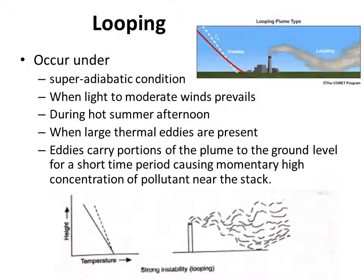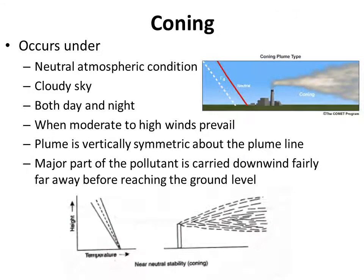The area where concentration of pollutant becomes very high on the surface is the area affected by pollution. Coning is a type of plume behavior that occurs under neutral atmospheric conditions and is usually seen during cloudy sky both day and night when moderate to high winds prevail. The plume is vertically symmetric about the plume line, which is an imaginary line through the center of the plume parallel to the ground.